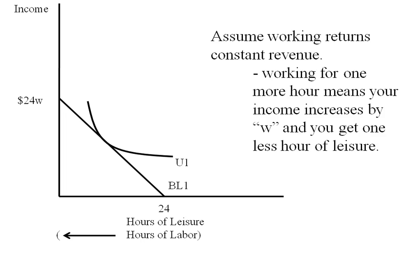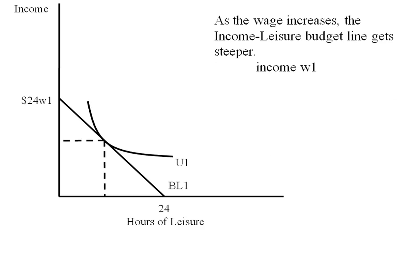We're going to have an indifference curve. We can find the optimal choice by looking at the tangency, and this would be this consumer's choice of hours of leisure and how much income they'd like.